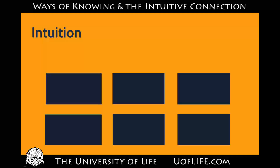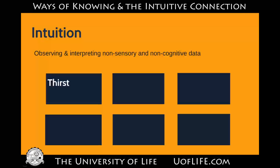All right, let's move on to intuition. Intuition has various types and definitions — some describe cognitive processes where your brain figures things out and you reach a snap decision easily. Those are not the ones I'm talking about. When I use the word intuition, I mean observing and interpreting non-sensory — not your five senses — and non-cognitive — not thinking — data. Thirst is a good example to set the stage: you might think that's a feeling, that's sensory, but thirst actually operates by neurotransmitters. When you get dehydrated, your brain releases these and makes you feel thirsty.